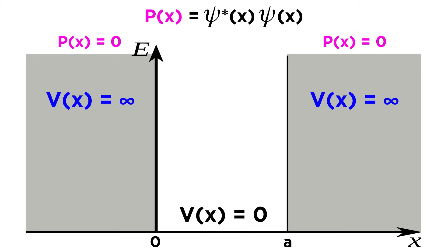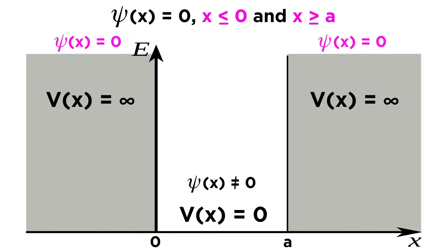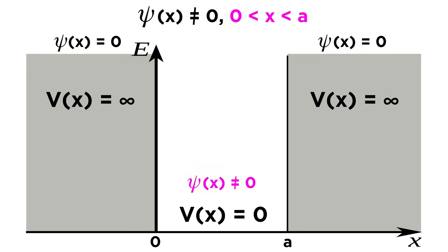The probability density function is psi-star times psi, so the only way for this to equal zero is for psi of x to equal zero. Therefore, psi of x equals zero when x is less than or equal to zero, and also when x is greater than or equal to a. But between x equals zero and x equals a, the wave function does not equal zero, and its value can be determined using the Schrödinger equation.